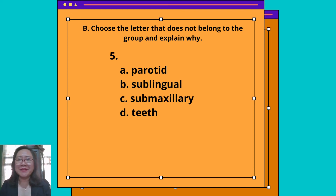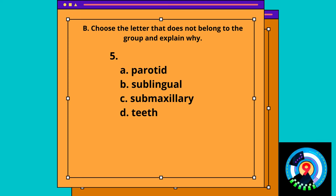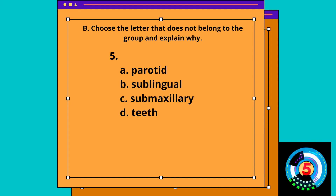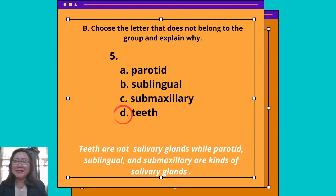Number 5 — Answer: Letter D, Teeth. Teeth are not salivary glands, while parotid, sublingual, and submaxillary are kinds of salivary glands.